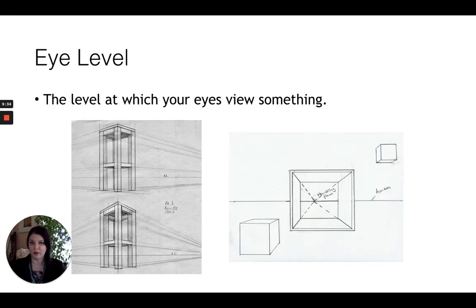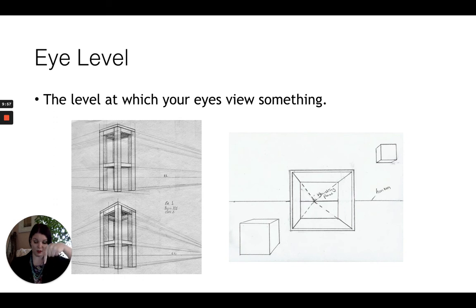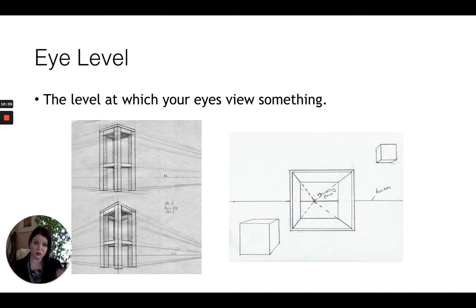Eye level is the level at which your eyes view something, and this corresponds very often to where the horizon line is and therefore where our vanishing point is. Sometimes when talking about perspective we say you have a worm's eye view — meaning you're looking up at whatever it is, particularly relevant in three point perspective — or a bird's eye view, where you're up above looking down. Where the eye level of the viewer is will impact the perspective and the distortion in the image, and is something to consider when figuring out your compositions.